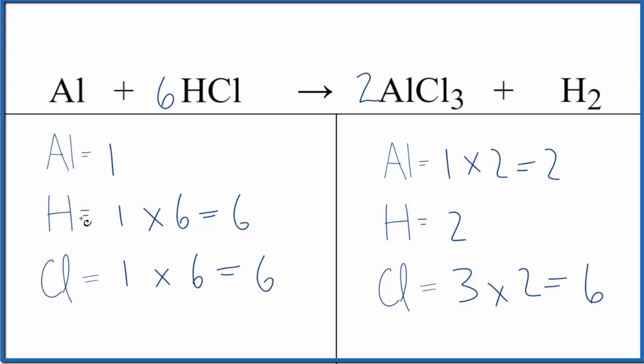So now to fix the aluminums, we'll just put a three in front of the H2, the hydrogen gas. Two times three, that gives us six.